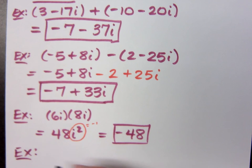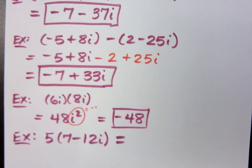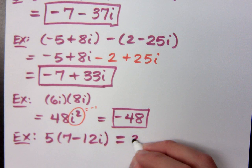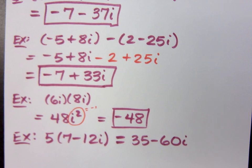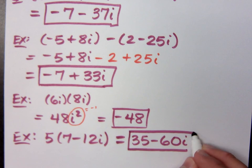Let's see what else we have. We've got 5 times the quantity 7 minus 12i. Let me guess. I've gone crazy on you now, huh? What are you going to do here? Distribute. How does it distribute? 35 minus 60i. Is there anything else to do? Nope. So we're just going to box that.